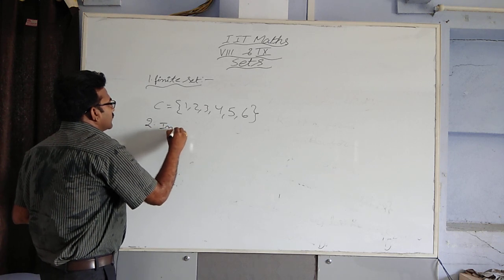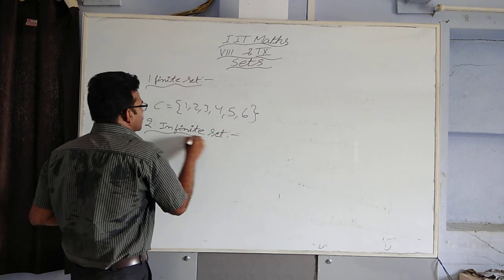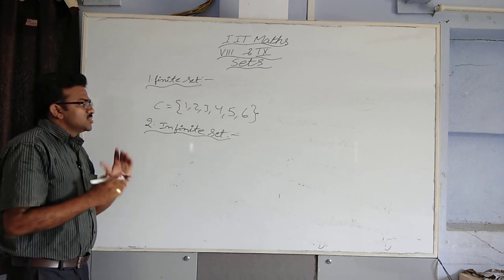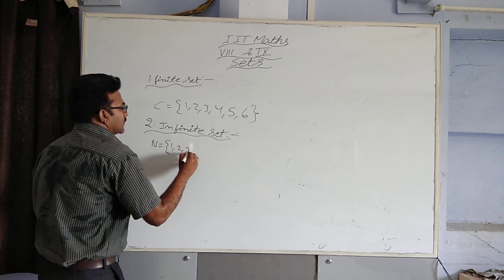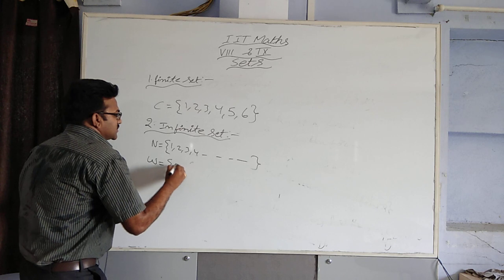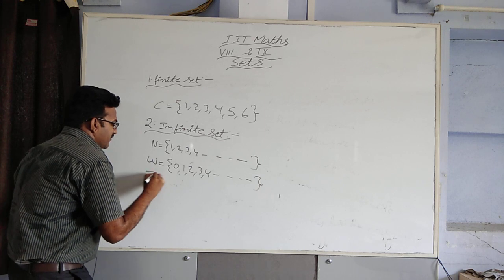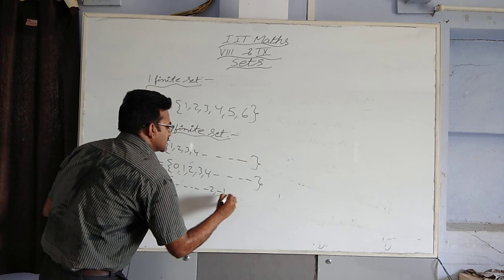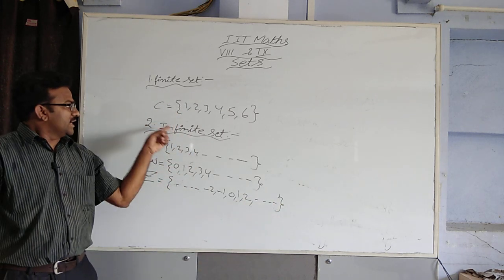Second one is infinite set. What do you mean by infinite set? A set consisting of an uncountable number of elements. The best example is the set of natural numbers — 1, 2, 3, and so on. There is no ending, it is uncountable. Next, set of all real numbers — uncountable. Next, set of integers: ..., minus 2, minus 1, 0, 1, 2, and so on. These are best examples for the infinite set.